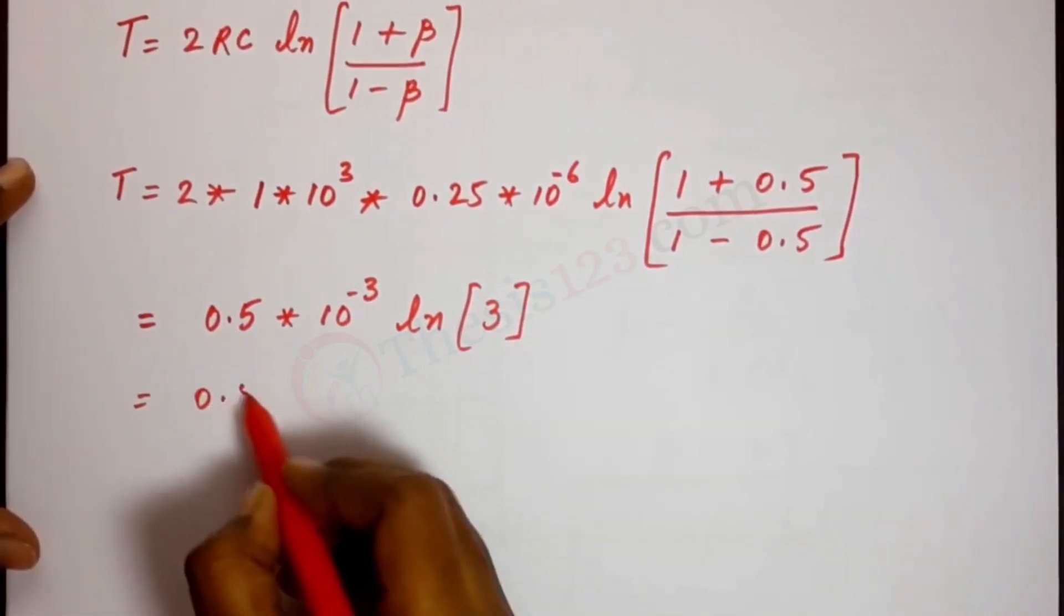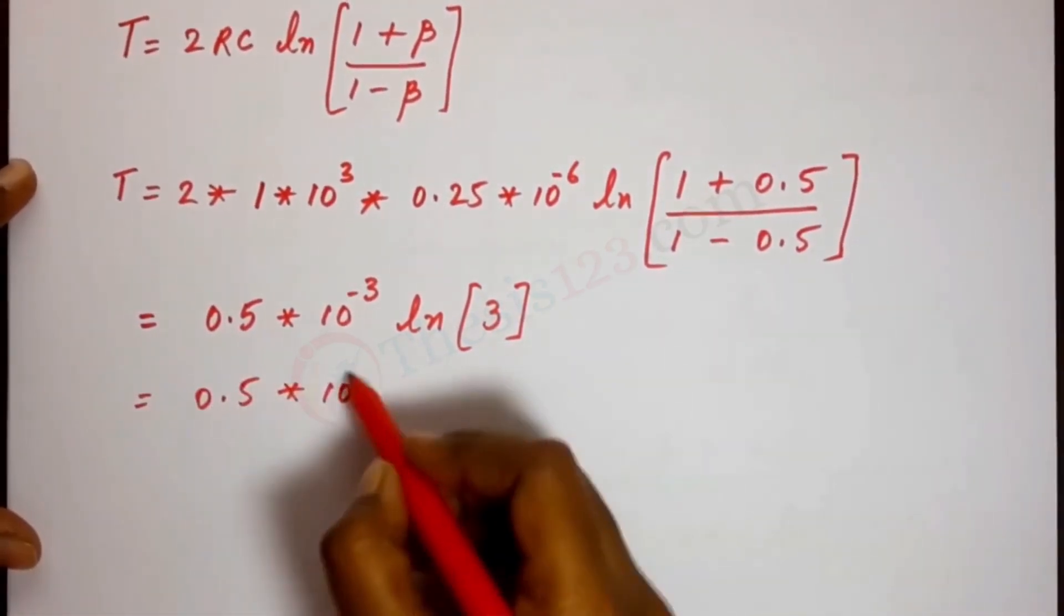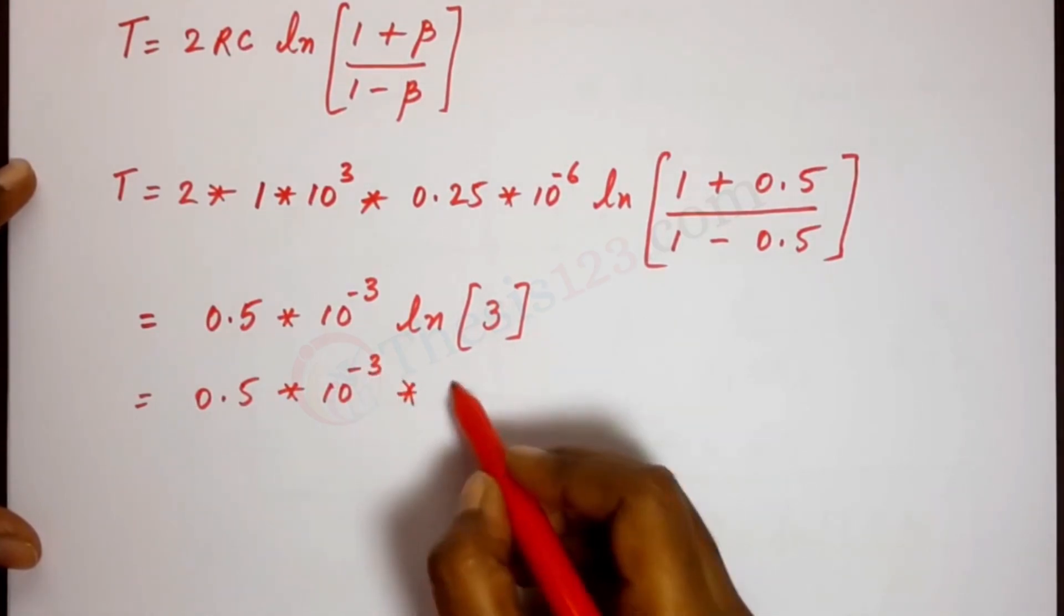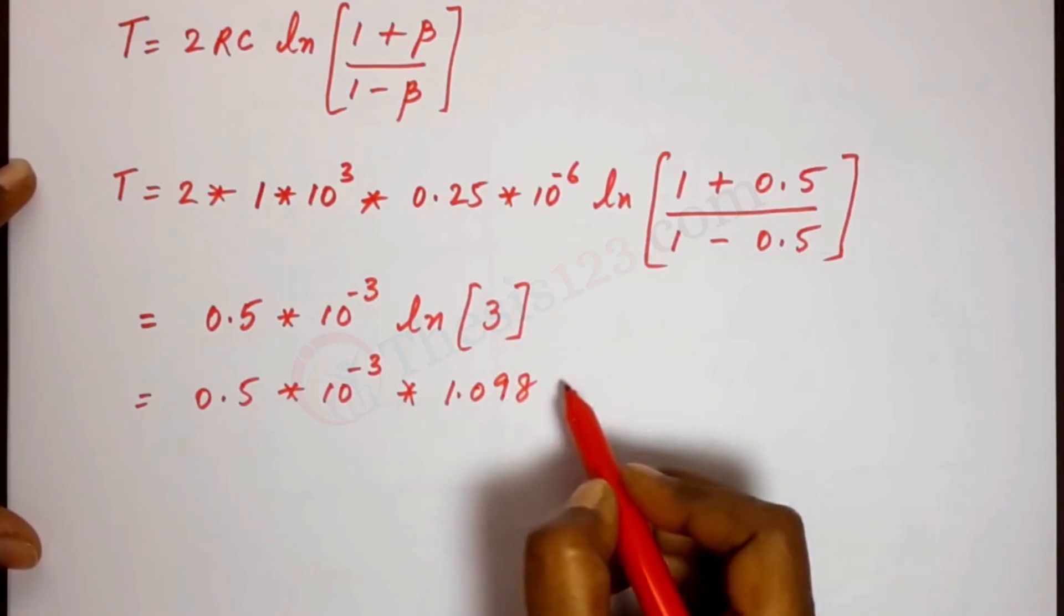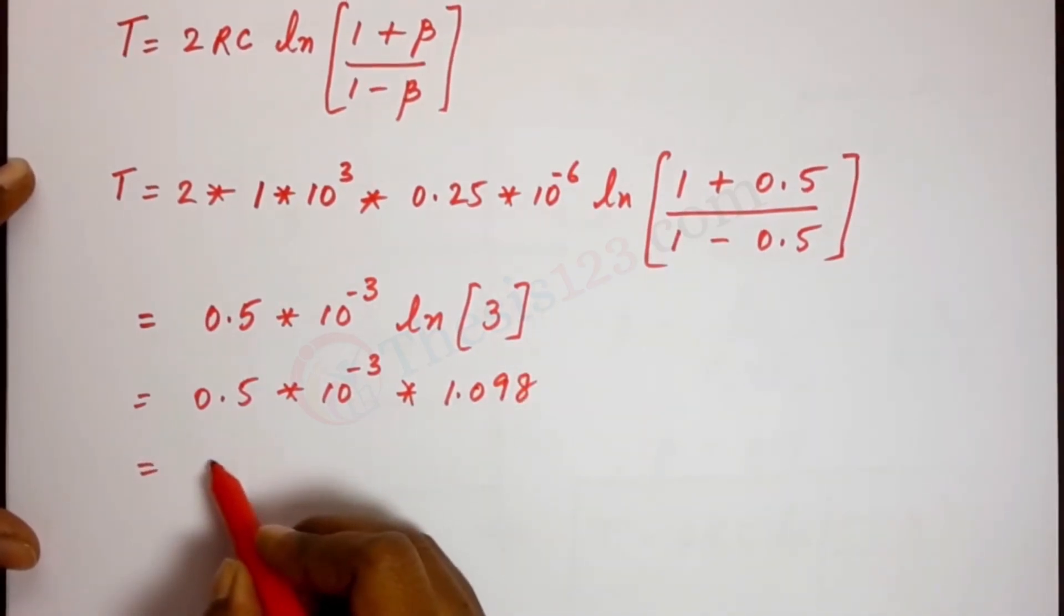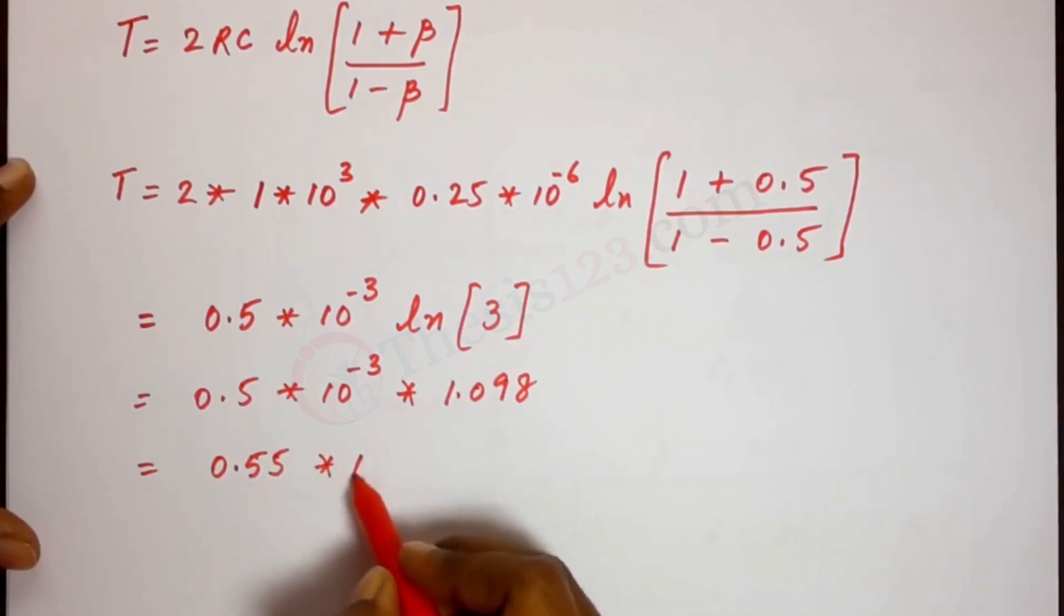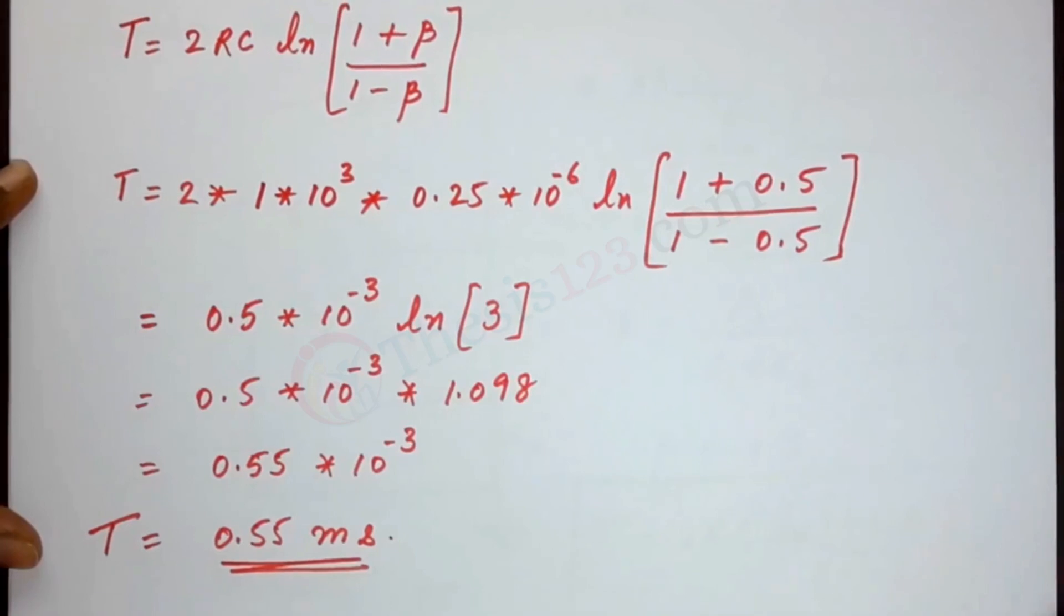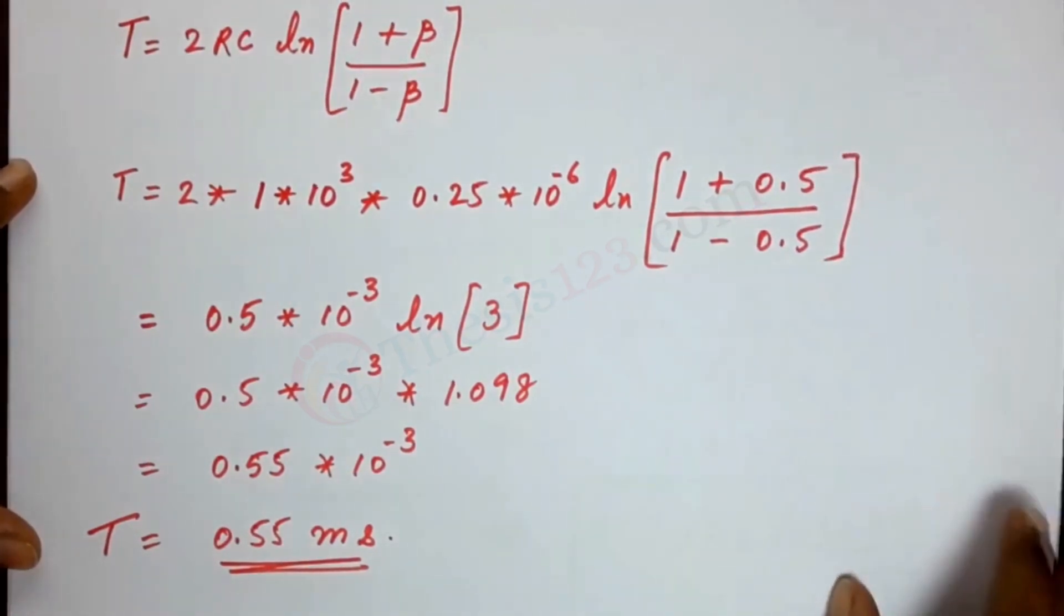Solving it further, the value of Ln of 3 is 1.098. And we solve this to get 0.55 into 10 power minus 3. Now 0.55 into 10 power minus 3 can be written as 0.55 millisecond. So our time period is 0.55 millisecond.